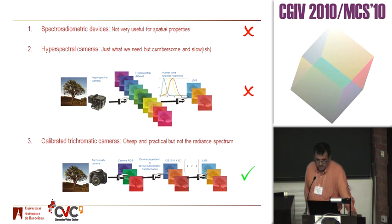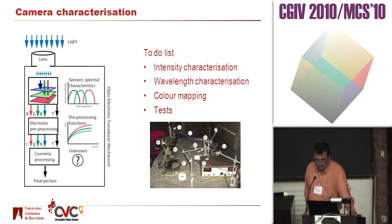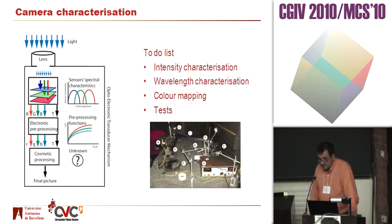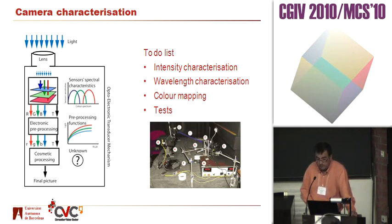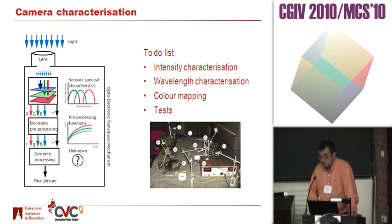How did we characterize the camera? Basically you need to characterize it in terms of intensity and in terms of wavelength, then do a color mapping, and of course do some tests to show that your characterization is good.